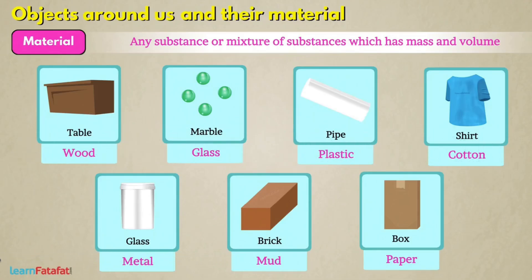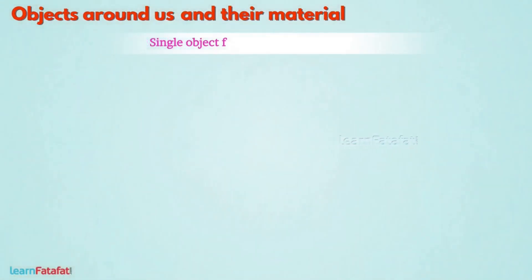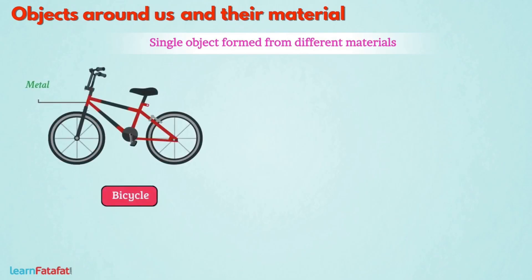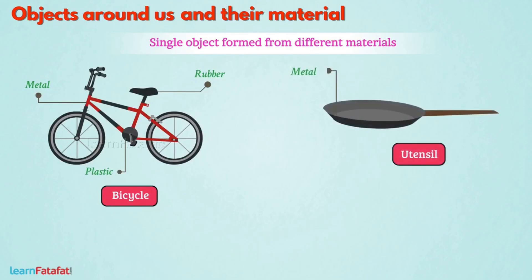A single object is usually formed from different materials. For example, a bicycle is made of metal, rubber, and plastic. A utensil is made of metal with the handle of wood or plastic.